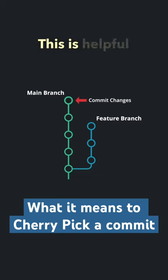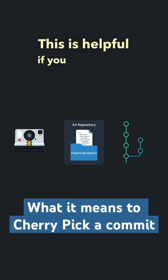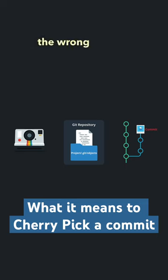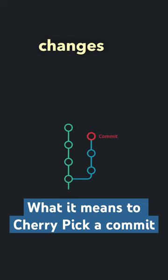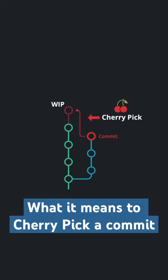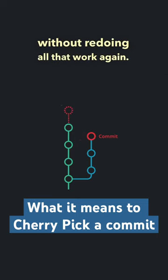This is helpful if you accidentally make a commit to the wrong branch. With cherrypicking, you can get those changes onto the correct branch without redoing all that work again.